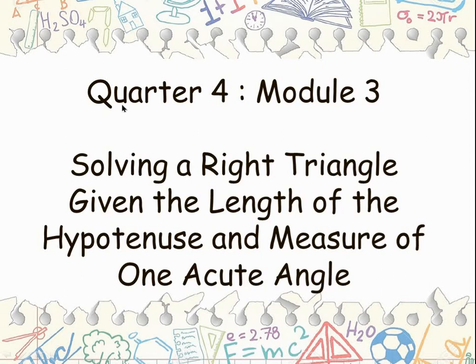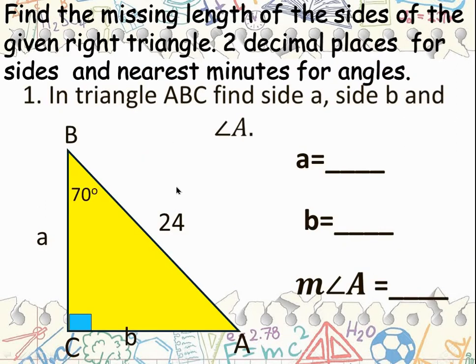Good day everyone. Today we're going to discuss Quarter 4 Module 3, solving a right triangle given the length of the hypotenuse and the measure of one acute angle. Find the missing length of the sides of the given right triangle. Give your answer in two decimal places for sides and nearest minutes for angles.